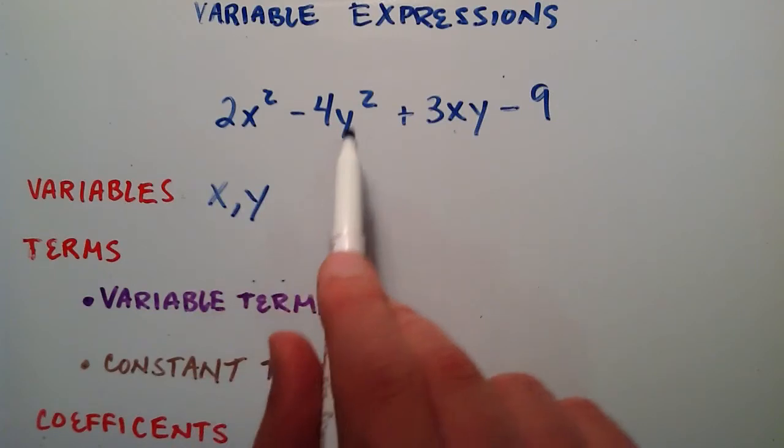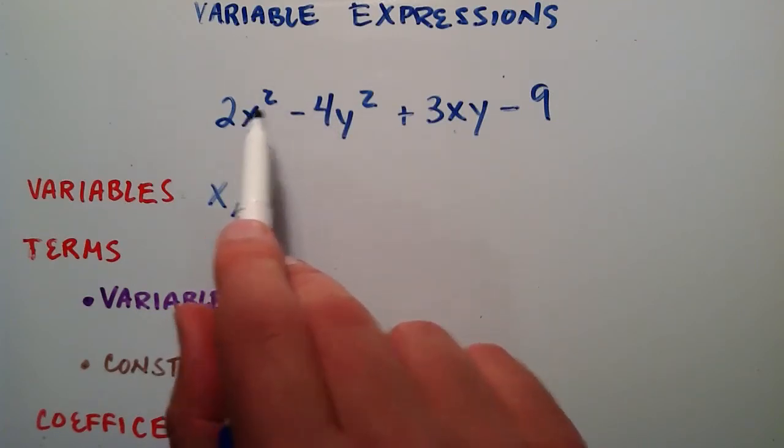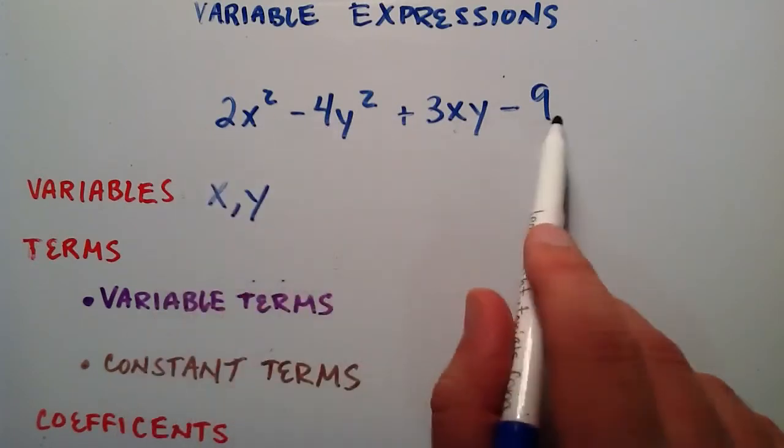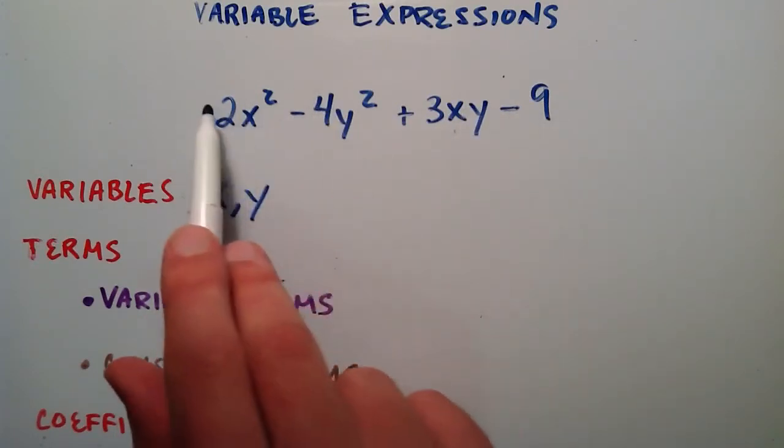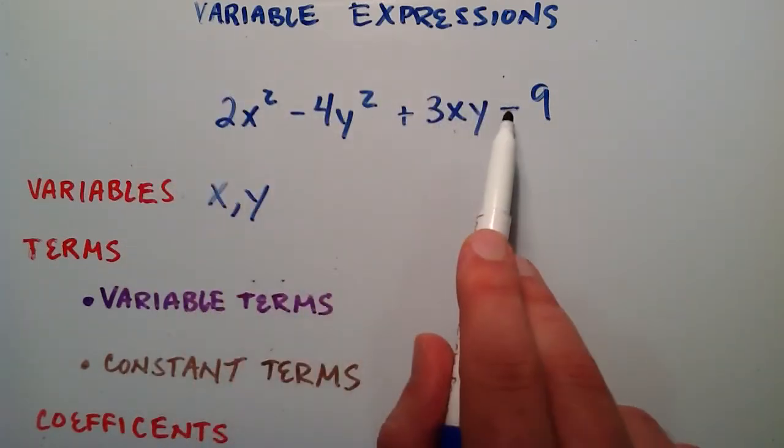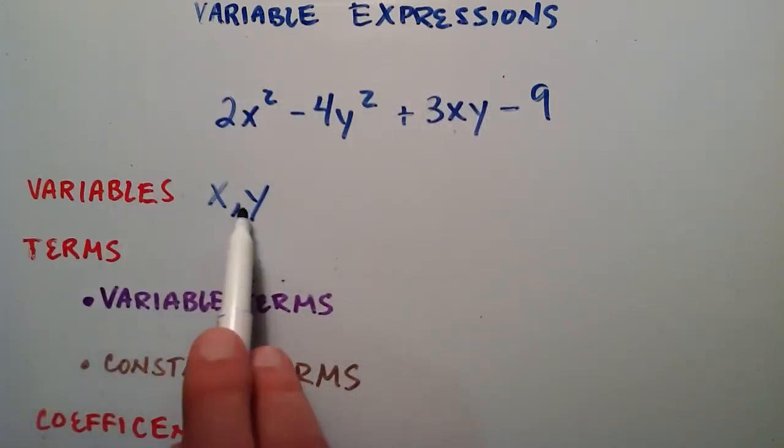We could say that x is 25 and y is equal to a million, and this would have a completely different answer. That's why the expression varies. It is a variable expression. It varies its value depending on what our variables are.